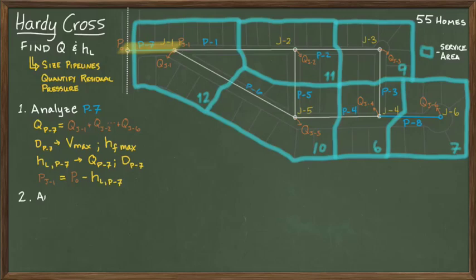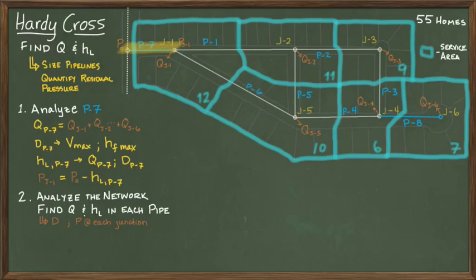The next step is to run the Hardy Cross method on the entire network, which will give you the flow rate, diameter, and head loss at each pipeline. This gives you the residual pressure at each of the junctions.